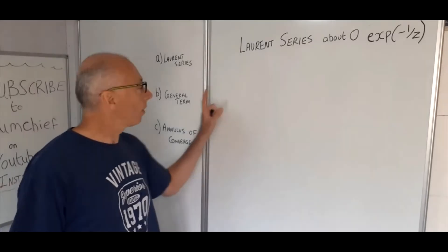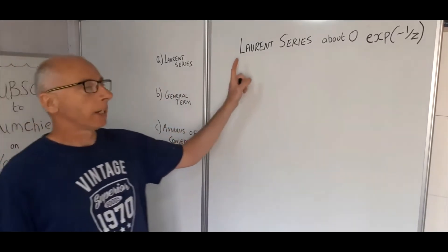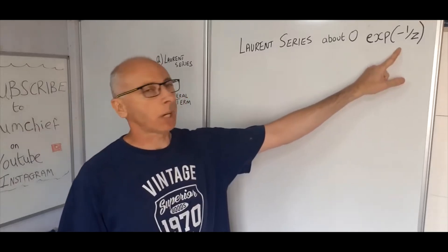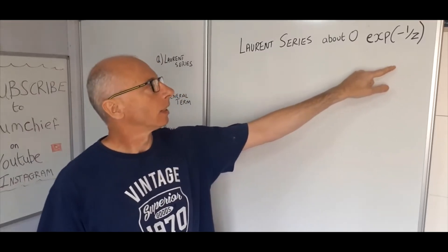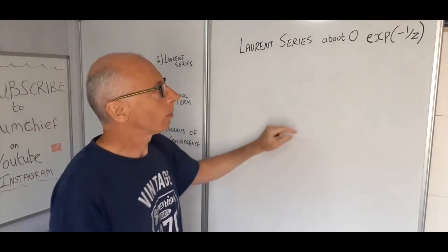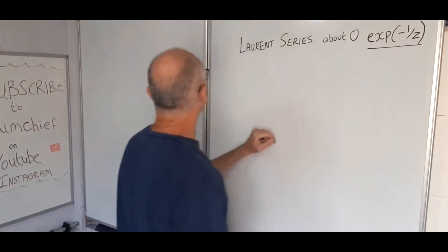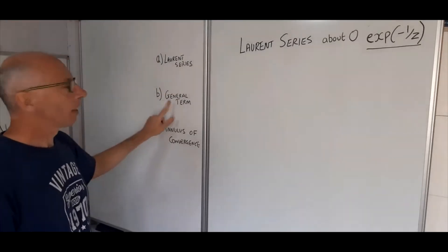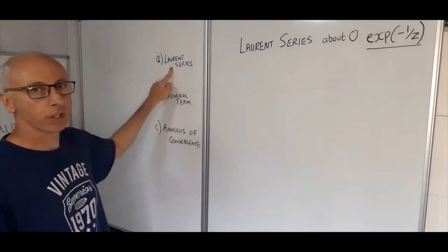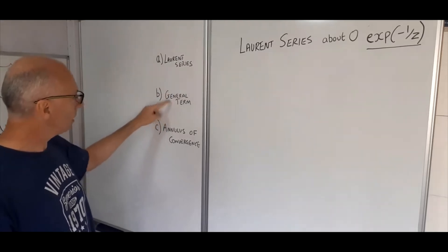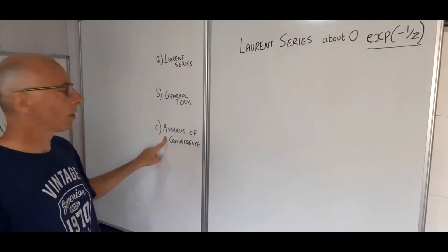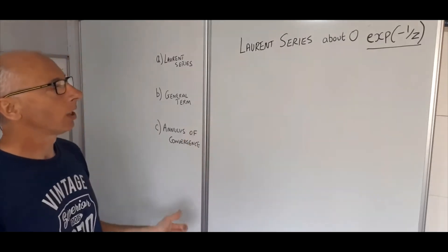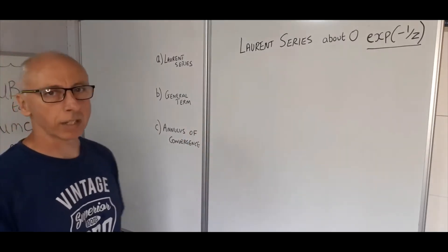Okay, so we've got a question here in three parts. Initially we're going to find the Laurent series about zero for e to the minus one over z. That's our function we're dealing with today. We're looking for the Laurent series, then we're going to find the general term, and then using this we're going to find the annulus of convergence. When finding the Laurent series we need to watch the terms and conditions for what z can equal.